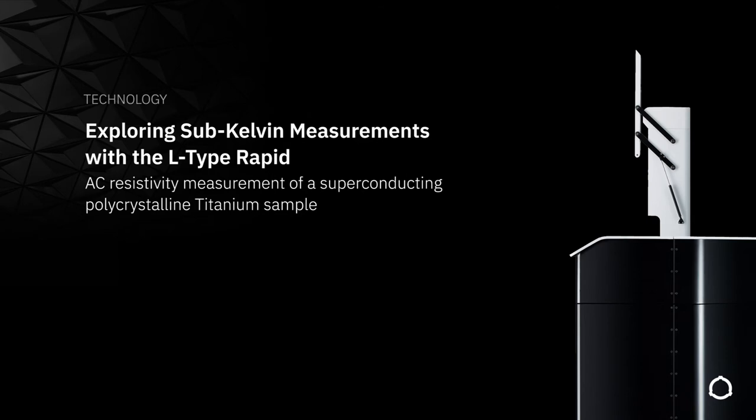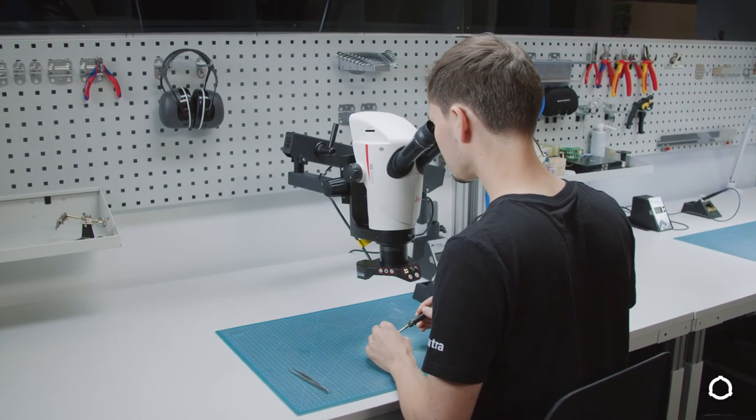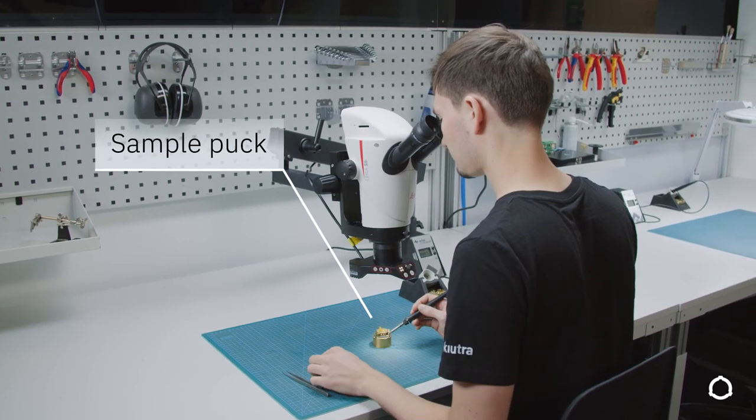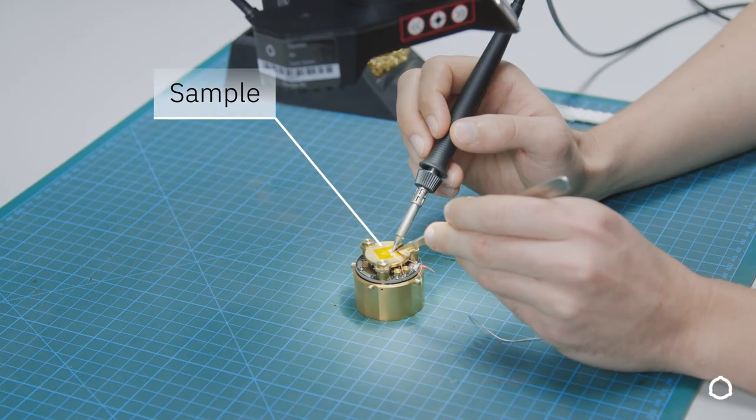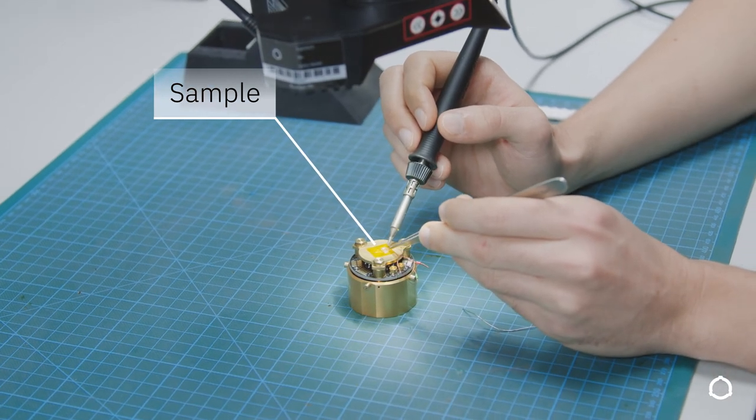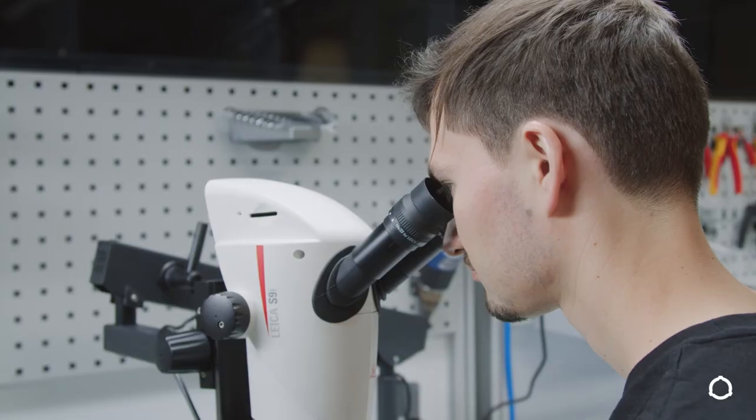Now in the last part of this webinar, I would like to demonstrate how to use the L-Type Rapid and our instrument control and measurement software for a simple low-temperature experiment. I will demonstrate how to carry out an AC resistivity measurement on a titanium sample, where we track the superconducting transition at around 500 mK and suppress the transition by the application of an external magnetic field. The L-Type Rapid features our puck-based sample transfer mechanism, so the first thing to do is to prepare the sample on the sample puck. The sample puck has a platform which can accommodate customer setups and samples of up to 36 mm in diameter and 100 mm in height. The puck connects 40 DC lines via bondable terminals as well as up to 4 additional RF lines via mini-SMP connectors.